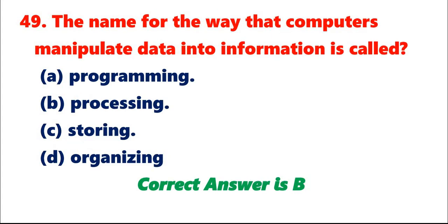Question 49: The name for the way that computers manipulate data into information is called A. Programming. B. Processing. C. Storing. D. Organizing. Correct answer is B.